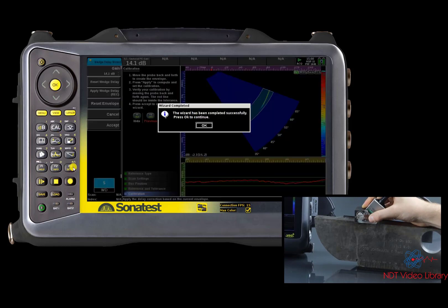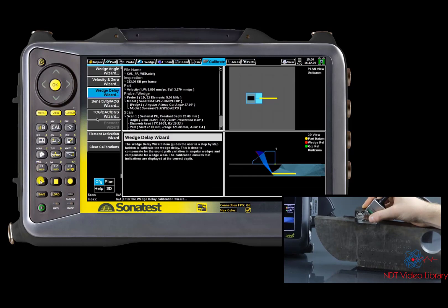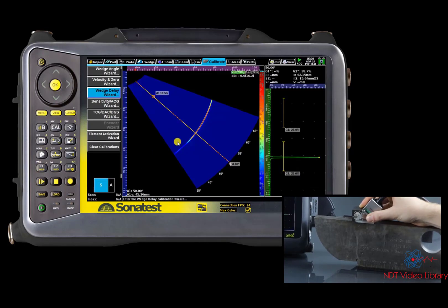We can now see that the reflector is at 100ml for all angles and that the wedge delay calibration indicator status is green.